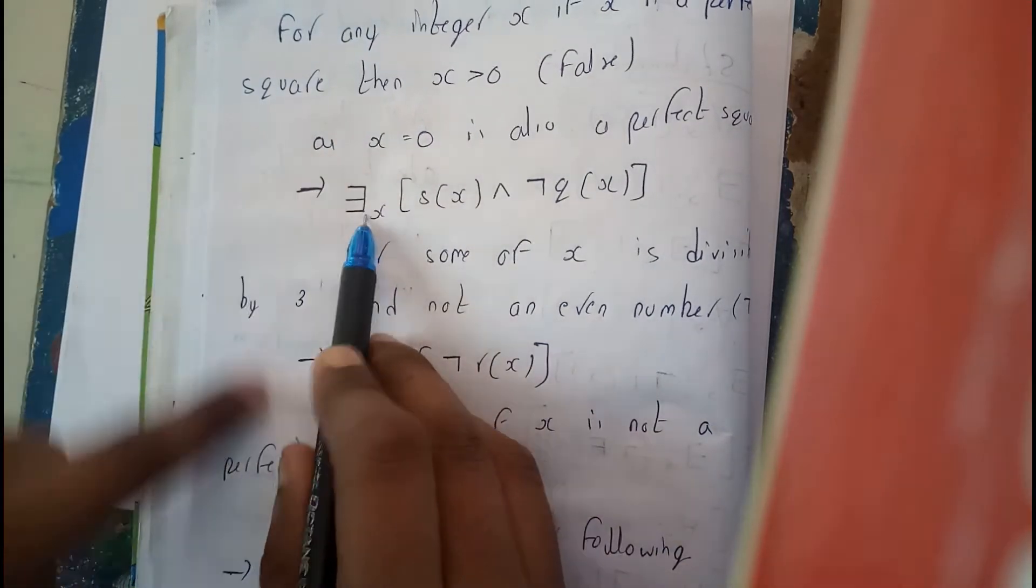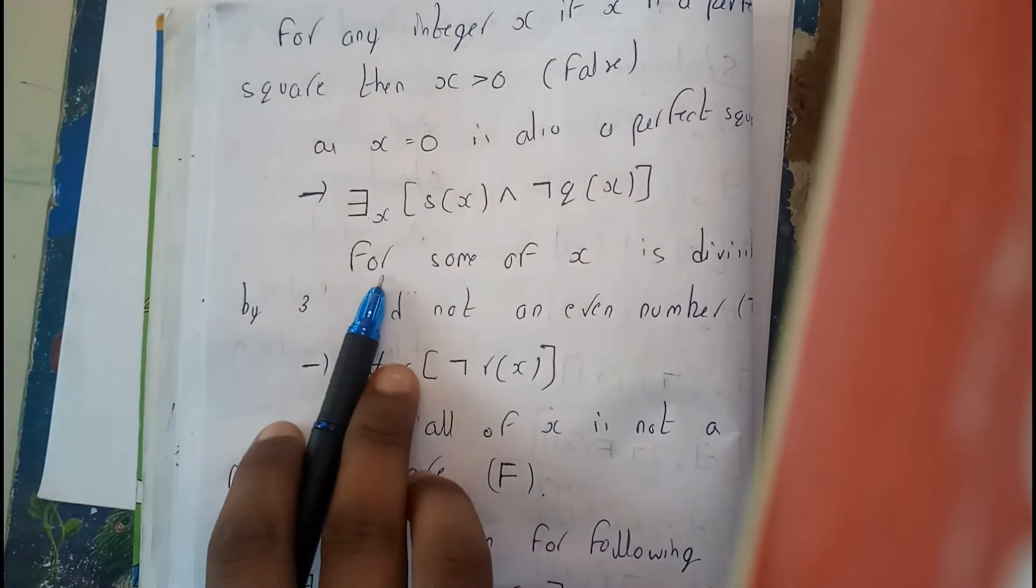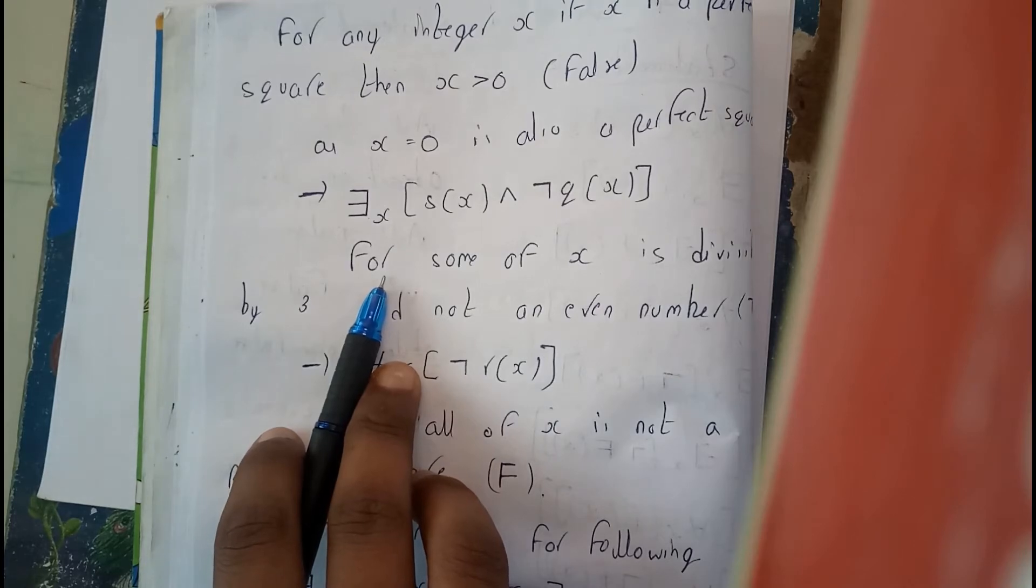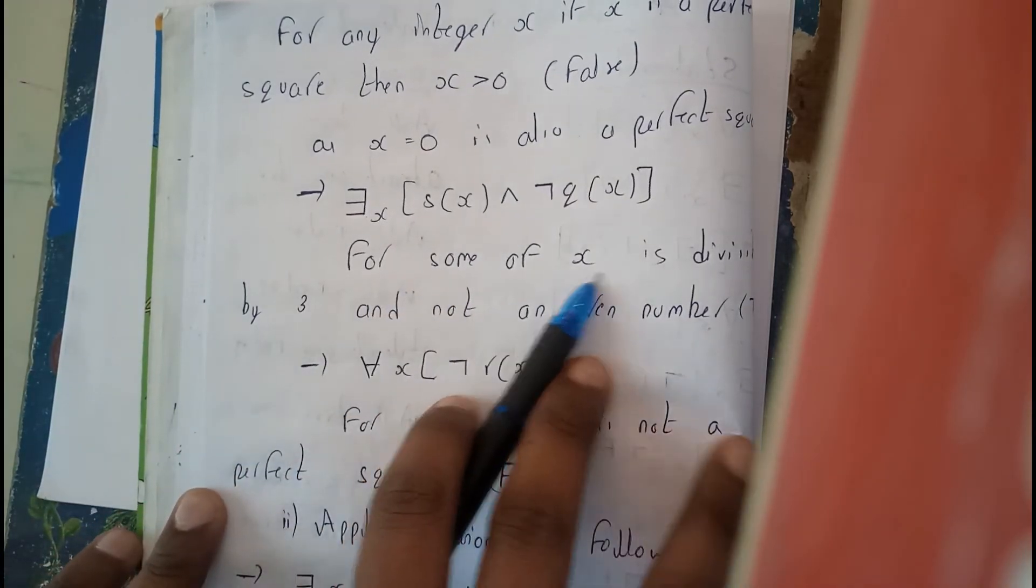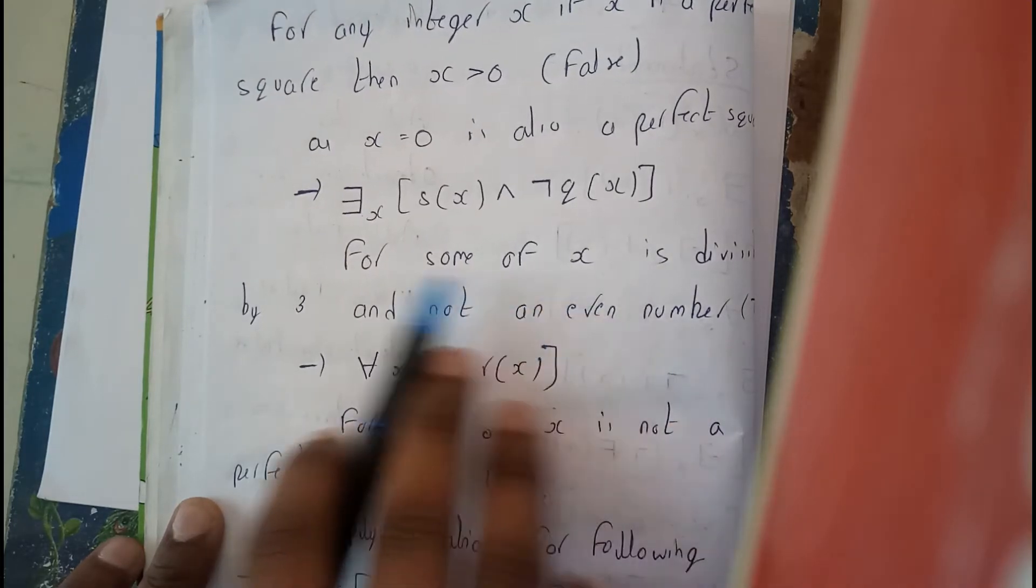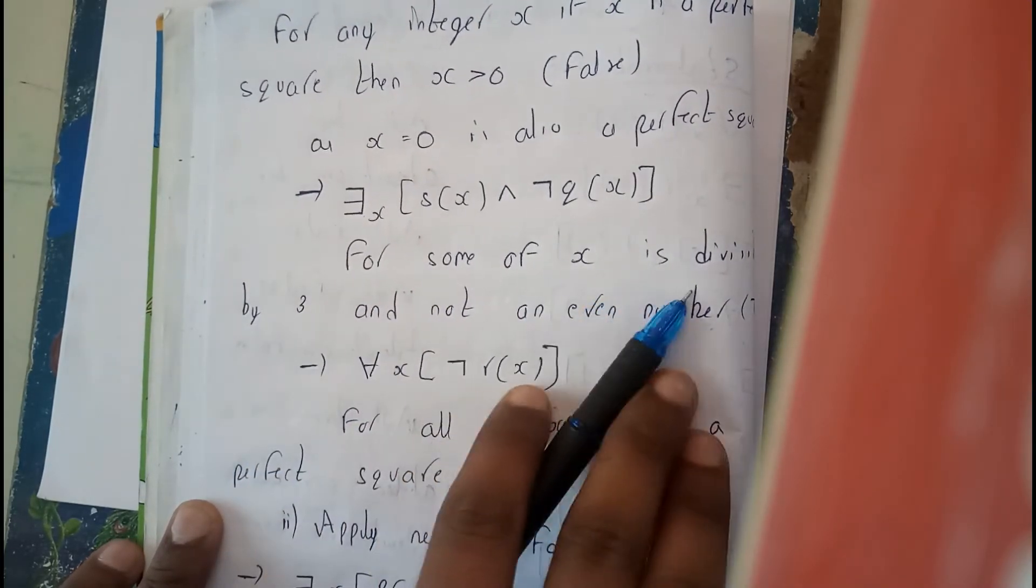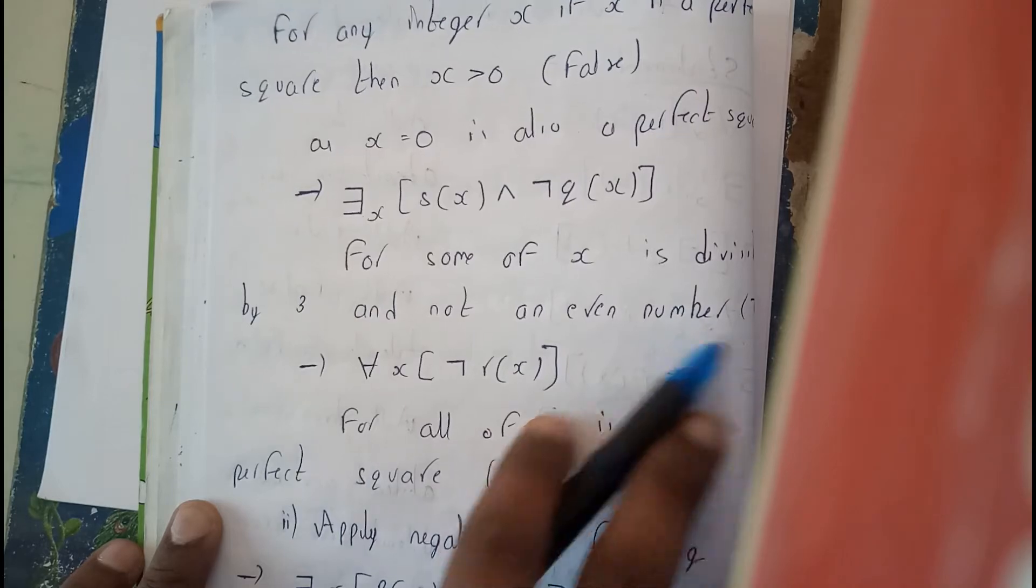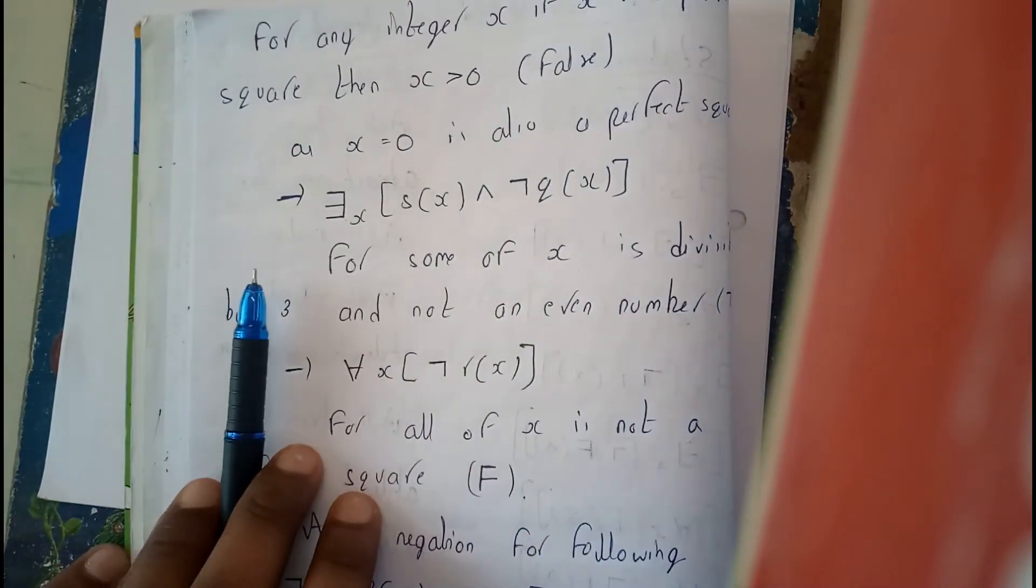Next statement. For few. Few or at least one, it's all up to you. For some of x is divisible by 3 and not an even number. For some of x is divisible by 3 and not an even number. Is this true always?